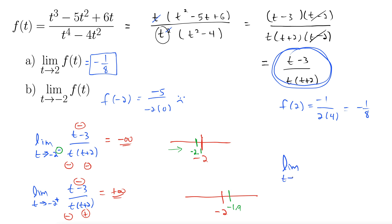The limit as t goes to negative 2 of this f(t) does not exist, which we will abbreviate as DNE for our final answer there.